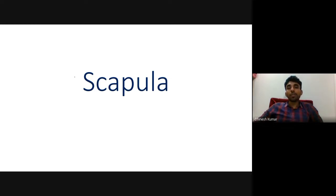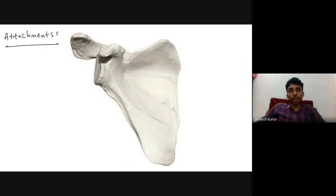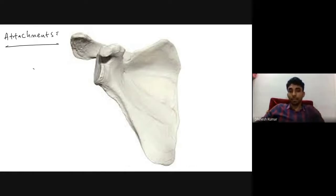In this video we are going to discuss the scapula bone. We've covered the various parts — borders, surfaces, angles, processes, and notches of the scapula. Now let's talk about the attachments: the muscles and ligaments attached to the various parts of the scapula. I'll focus mainly on the important muscles and ligaments that are commonly examined.